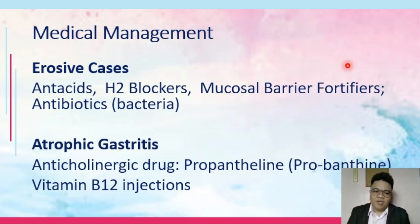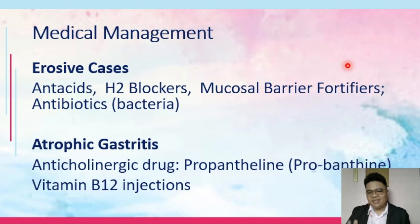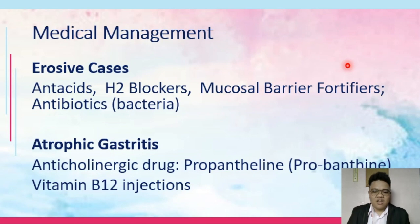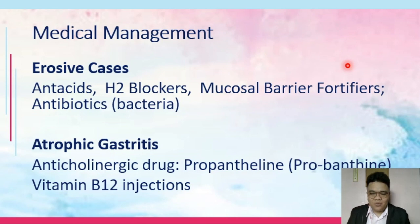For atrophic gastritis, one management approach is anticholinergic drugs such as Propantheline — consider its indication. We also administer vitamin B12 injections. You should know how frequently to administer vitamin B12 injections and how to determine that the injection is working.